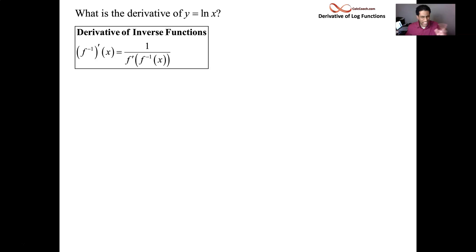Let's see how we can use this. We know these are inverses: e to the x and natural log of x. So we can use e to the x and its derivative to figure out how to take the derivative of the natural log of x.